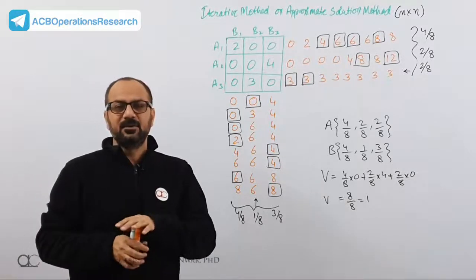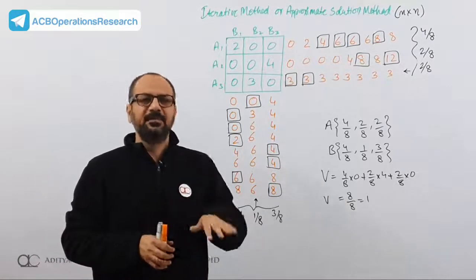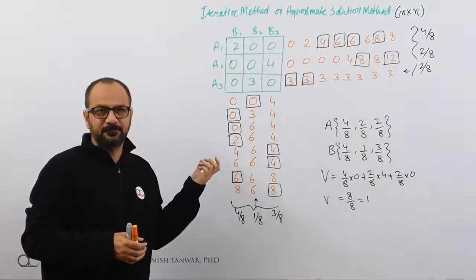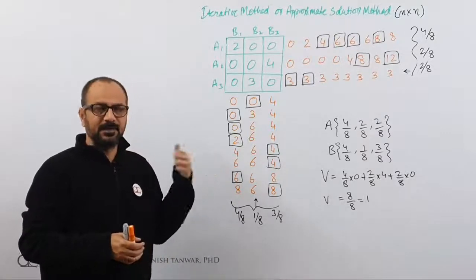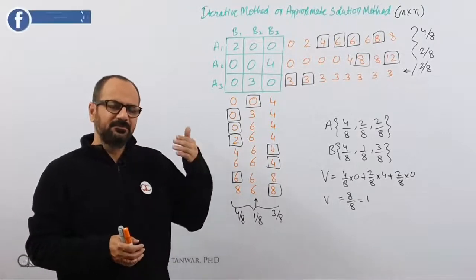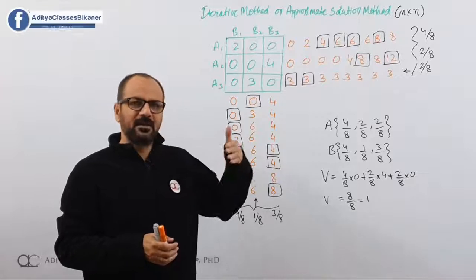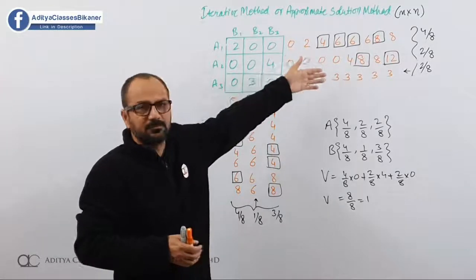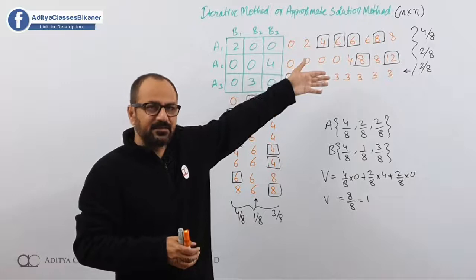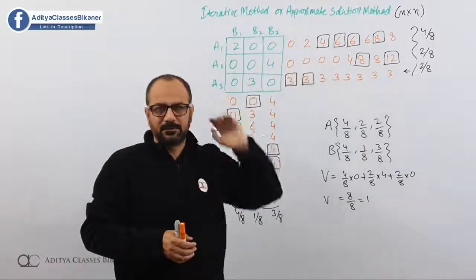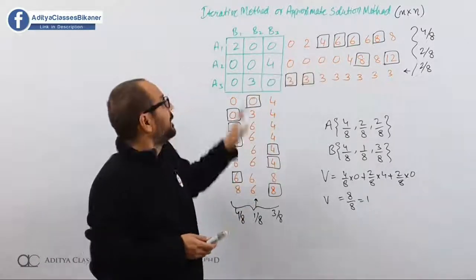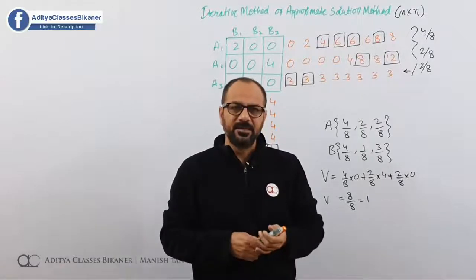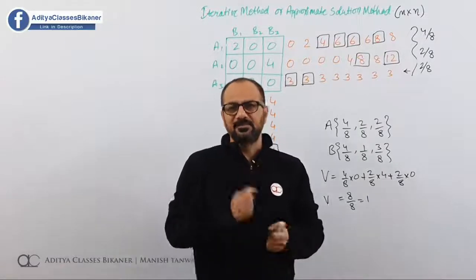Remember, your solutions can differ depending on what choices you make at ties. The question will typically specify: iterate for 8, 10, or 15 iterations. While doing iterations, try to stick with the dominating strategy — whenever there is a tie, stick with the strategy that has been getting you better returns in the past. That was it for the iterative or approximate solution method. Until we meet next time, take care, thanks for watching, bye bye.